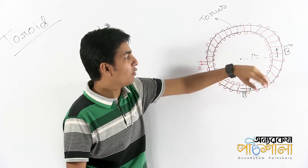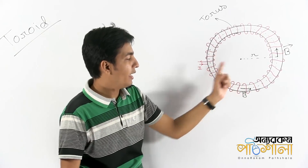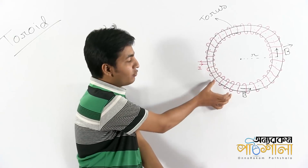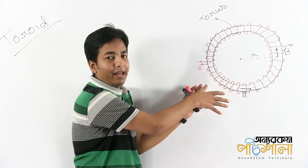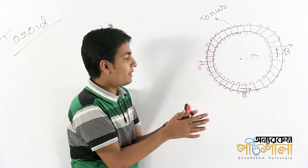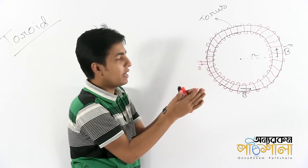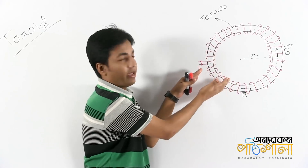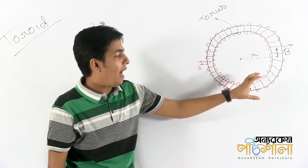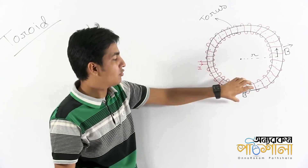This is an insulator type, meaning an antorok. This is the type of toroid. This is closely spaced. This is an ideal toroid.